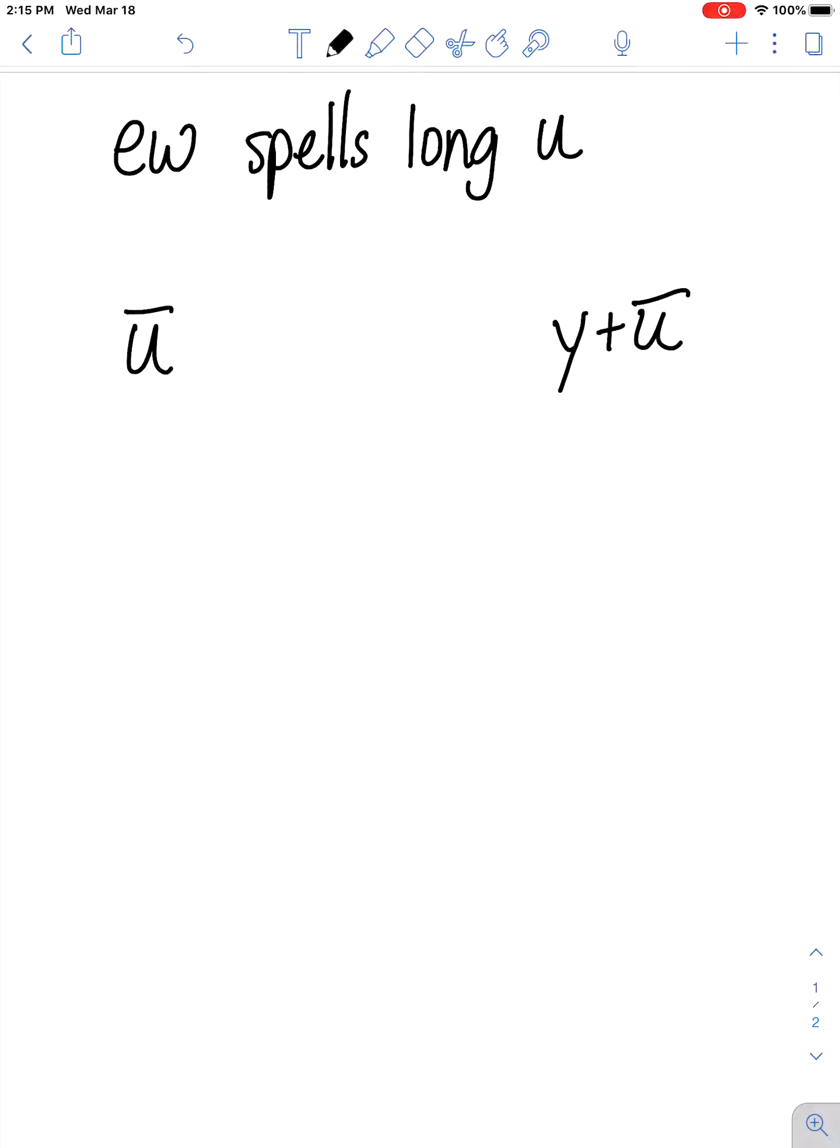Instead of ooh, you can hear the yeah plus the ooh, which says you. So all of our words this week use EW to spell either the ooh sound or the you sound.